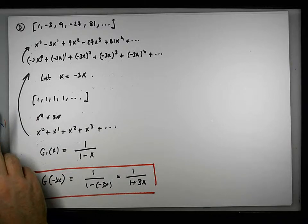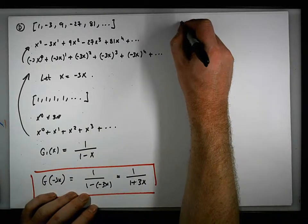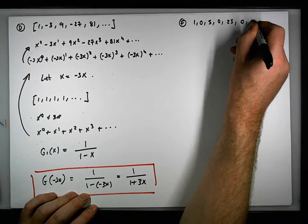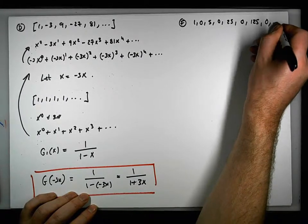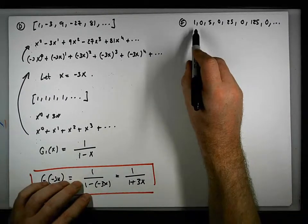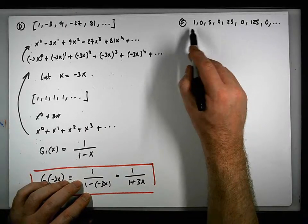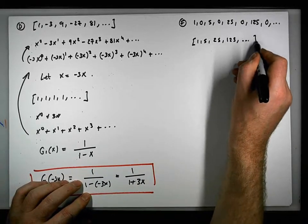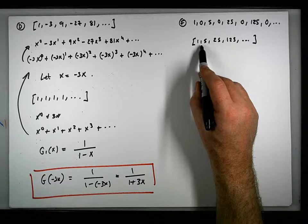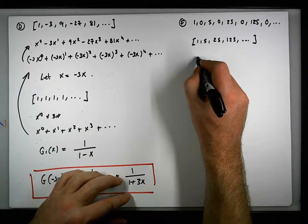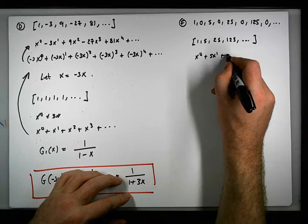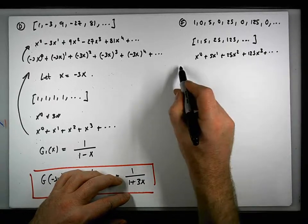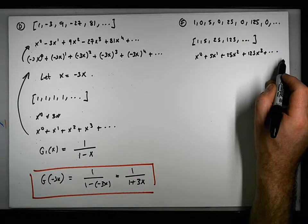So just continuing now, let's have a look at the next sequence, which is sequence f. Which is 1, 0, 5, 0, 25, 0, 125, 0, dot dot dot. Now we know the generating function — we know the generating sequence — we know for the sequence 1, 5, 25, 125, what its generating function is, and what its power series is. This is x to the 0 plus 5x to the 1 plus 25x squared plus 125x cubed. And its generating function — where's that gone to?